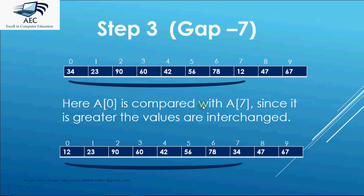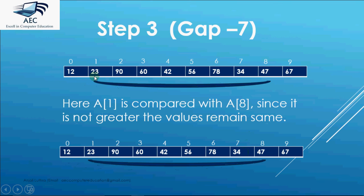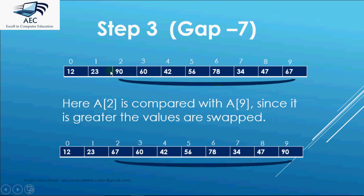The next comparison possible would be a[1] with a[8] that is at the gap of 7. A[1] and a[8] are compared. 23 is less than 47. We don't need a swap in this case. So they remain same. Next comparison possible is a[2] with a[9] at the gap of 7. Here 90 is greater than 67. So we interchange the values. 67 comes here and 90 goes here. So that's the end of step 3.